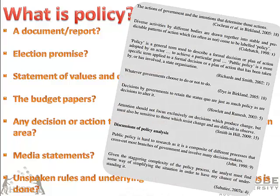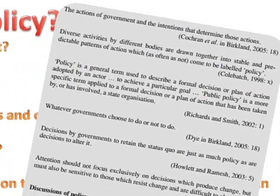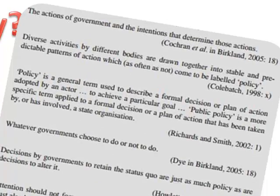Here's an overview of some of the approaches to policy. Cochrane says that policy is the actions of government and the intentions that determine those actions. And Dye, in the same Birkeland publication, says it's whatever governments choose to do or not to do. Even to consciously not do something is a policy decision.